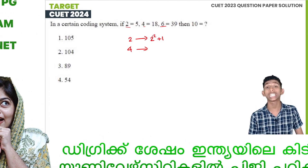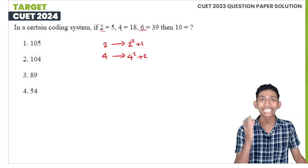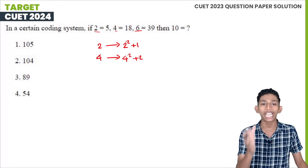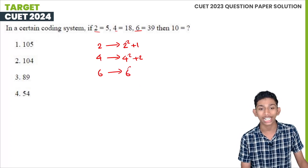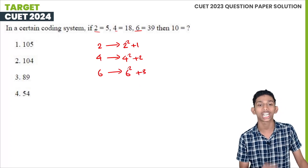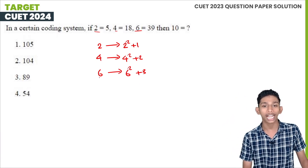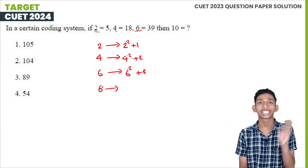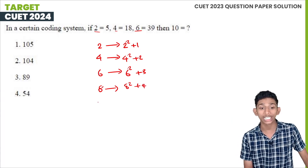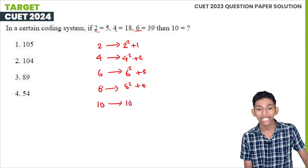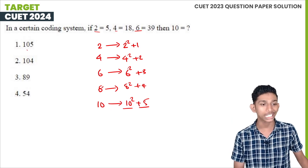Continuing: 4 is equal to 18 — 4 squared plus 2 equals 16 plus 2, which is 18. Next, 6 is equal to 39 — 6 squared plus 3 equals 36 plus 3, which is 39. The pattern is n squared plus n/2. So for 8: 8 squared plus 4 equals 68. For 10: 10 squared plus 5 equals 100 plus 5, which is 105.